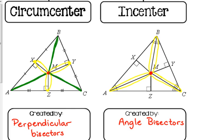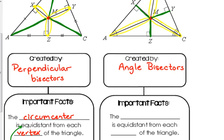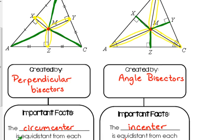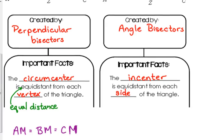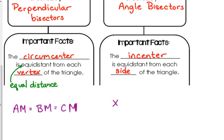From the incenter, there are segments drawn that are perpendicular to each side, and those are the same distance. XM, YM, and ZM are the same distances. The incenter is equidistant from each side of the triangle. When you go from the incenter and draw a segment to each side, you form a right angle with that side — you don't just draw it wherever you want. Those segments are equal to each other, so XM = YM = ZM.